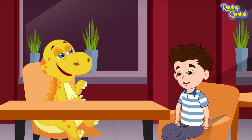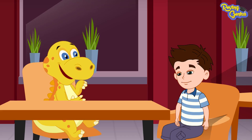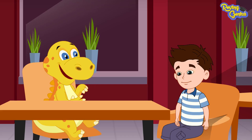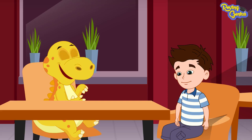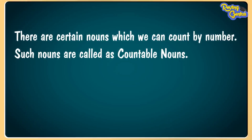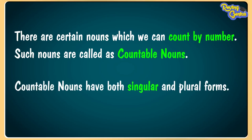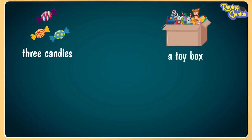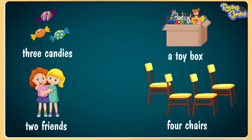Instead, you may have said a pasta, just like I said a pizza. Omar, both pasta and pizza are common nouns, but are of different kinds. Pizza is countable and pasta is not countable. There are different nouns which we can count by number — such nouns are called countable nouns. Countable nouns have both singular and plural forms, for example: three candies, a toy box, two friends, four chairs, etc.